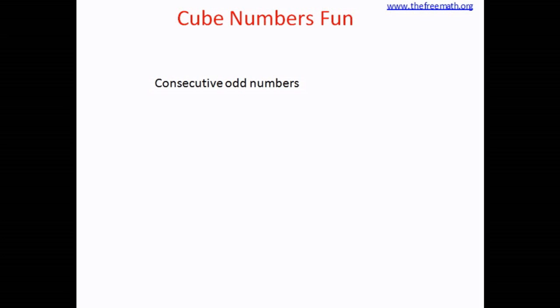So let's consider consecutive odd numbers starting from 1. So on the first line we will write only 1. On the next line let's write next 2 odd numbers which is 3 and 5.